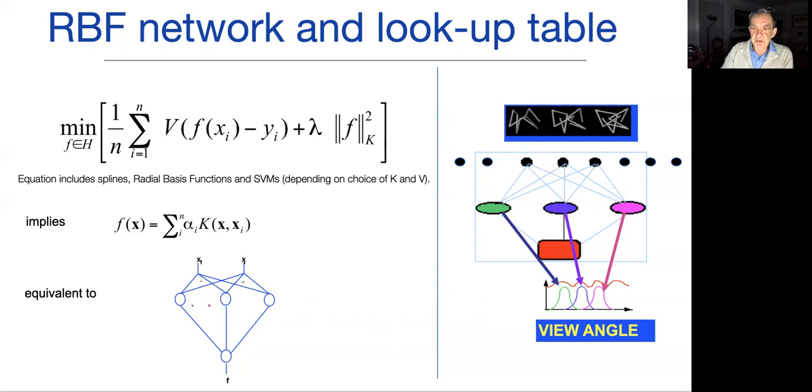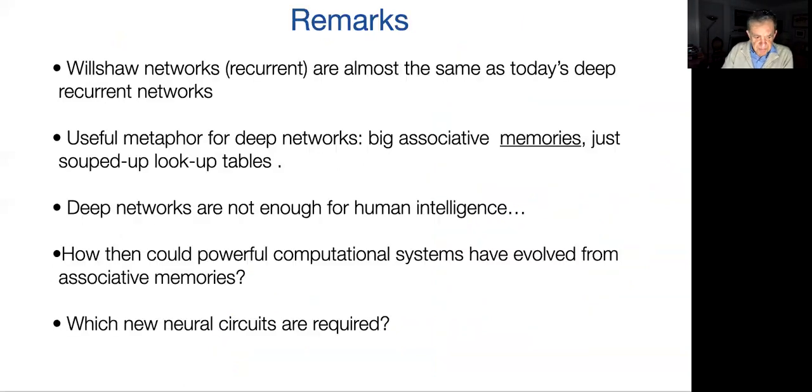That's obviously—I say obviously, but one can prove it—not enough to really explain the kind of intelligence we need for language or logic. The claim is deep networks or simple networks or radial basis functions are not enough to explain human-level intelligence. So the question is, what did evolution discover in addition to reflexes in order to have a more powerful computational system?